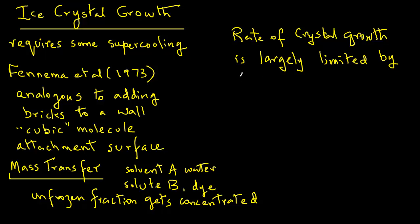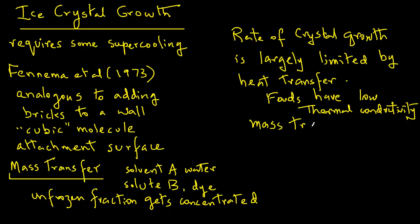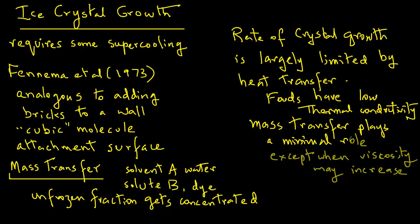When we compare the influence of both these mechanisms on crystal growth, it becomes evident that the rate of crystal growth is largely limited by the rate of heat transfer. In most practical applications, the low thermal conductivity of foods limits heat transfer. Mass transfer has a minimal role in the early stages of freezing when there are numerous solvent, that is water, molecules that can freely move to the growing surface. However, at low temperatures, towards the end of freezing, the viscosity of the sample may increase sufficiently to prevent uninhibited movement of water molecules.